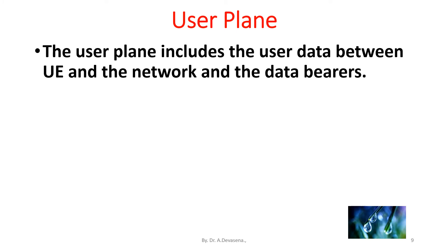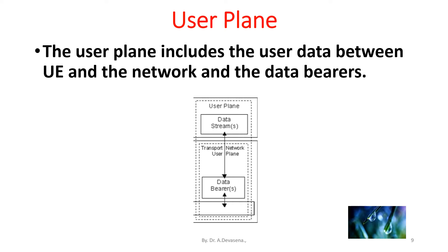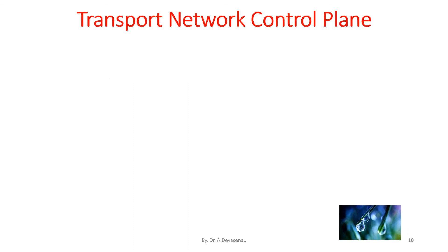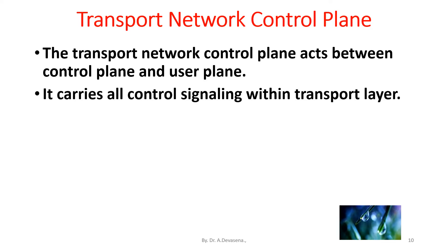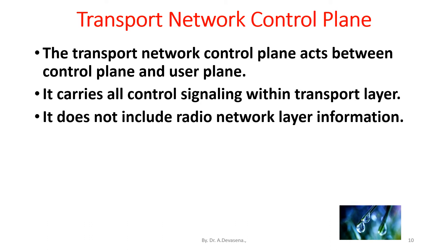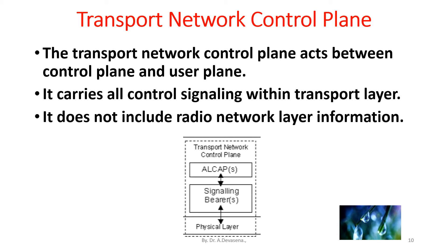The user plane contains data streams and data bearers. The transport network control plane acts between the control plane and the user plane. It carries all control signaling within the transport layer and does not include radio network layer information. The transport network control plane consists of ALCAP and signaling bearers.